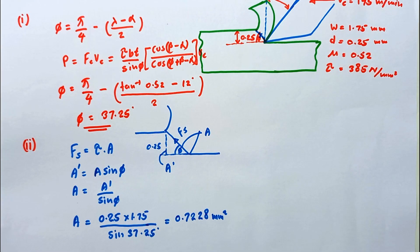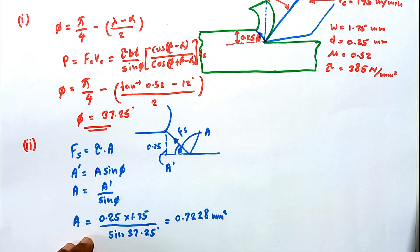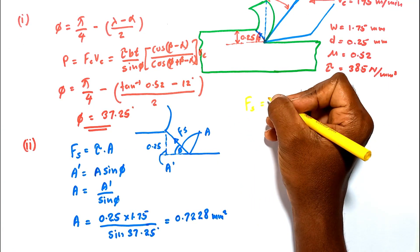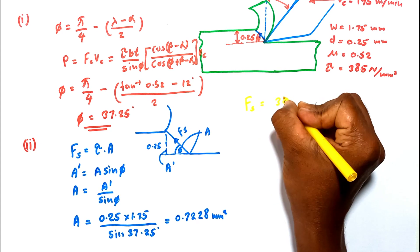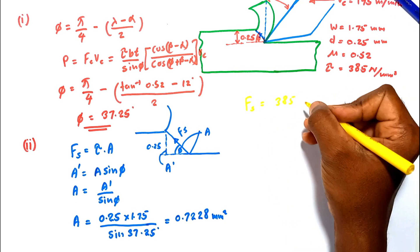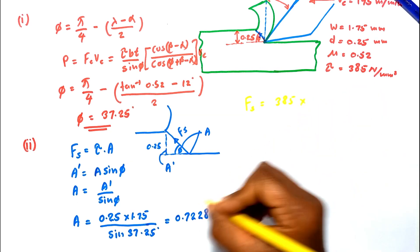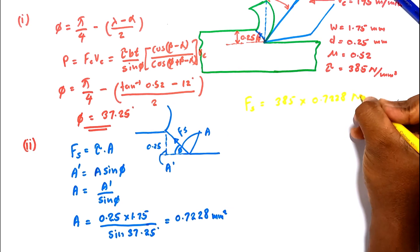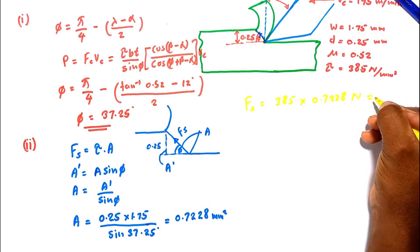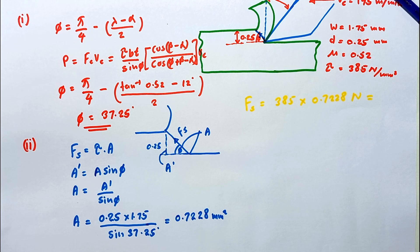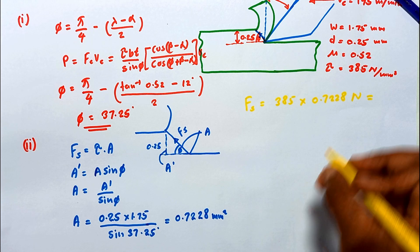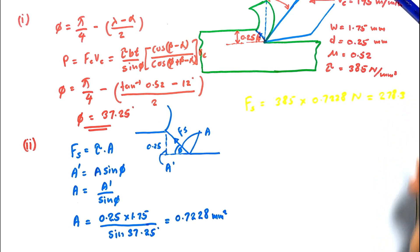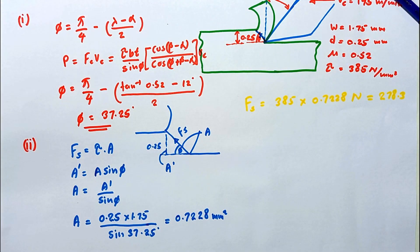Now we can calculate the shear force. Fs equals tau times A, which is 385 N per square millimeter times 0.7228 square millimeters. The shear force value equals 278.3 newton.